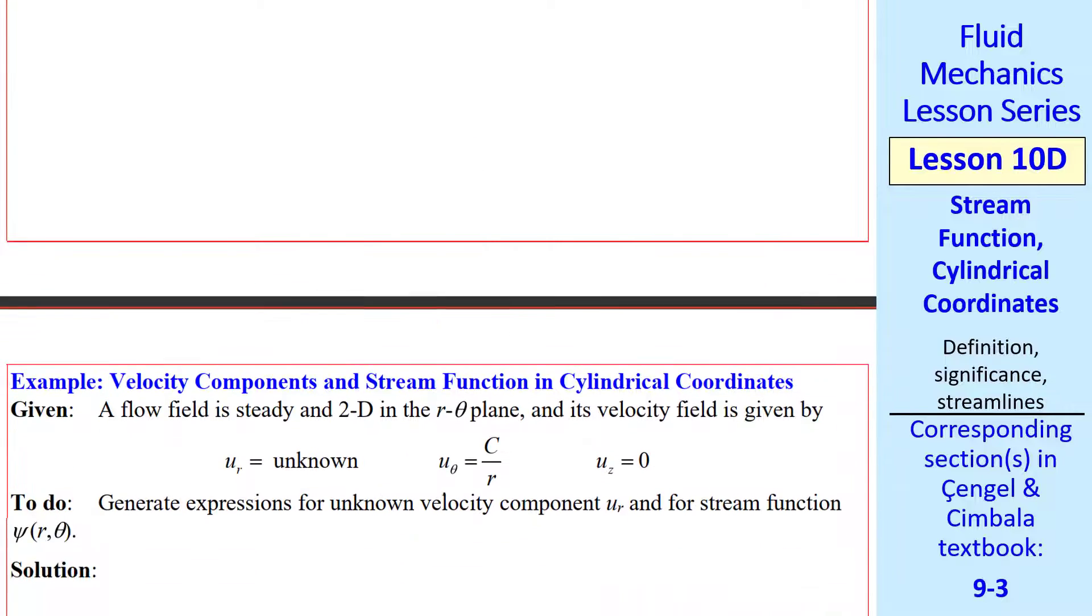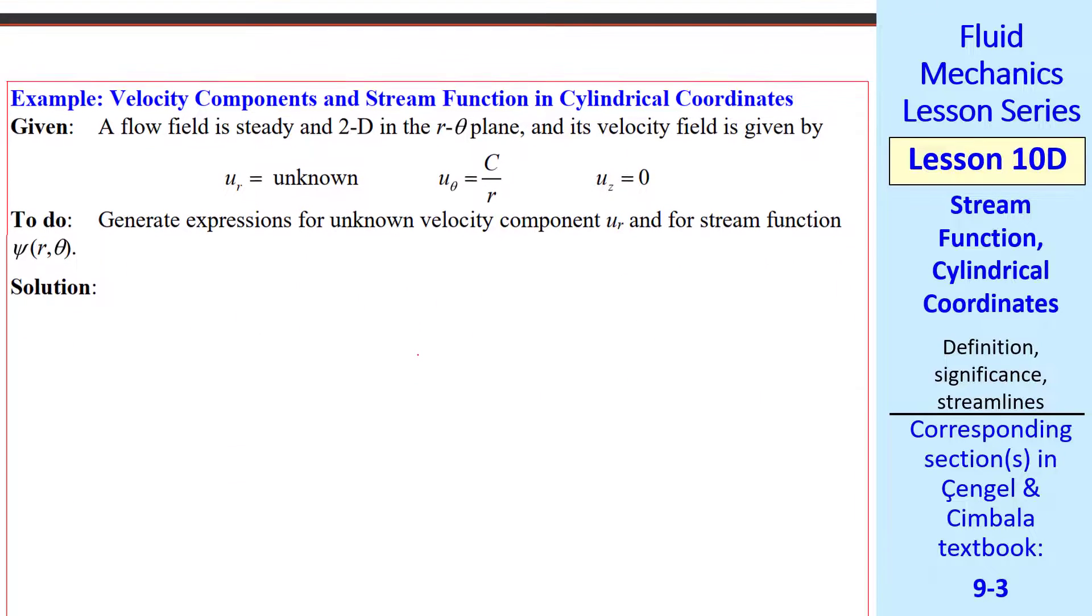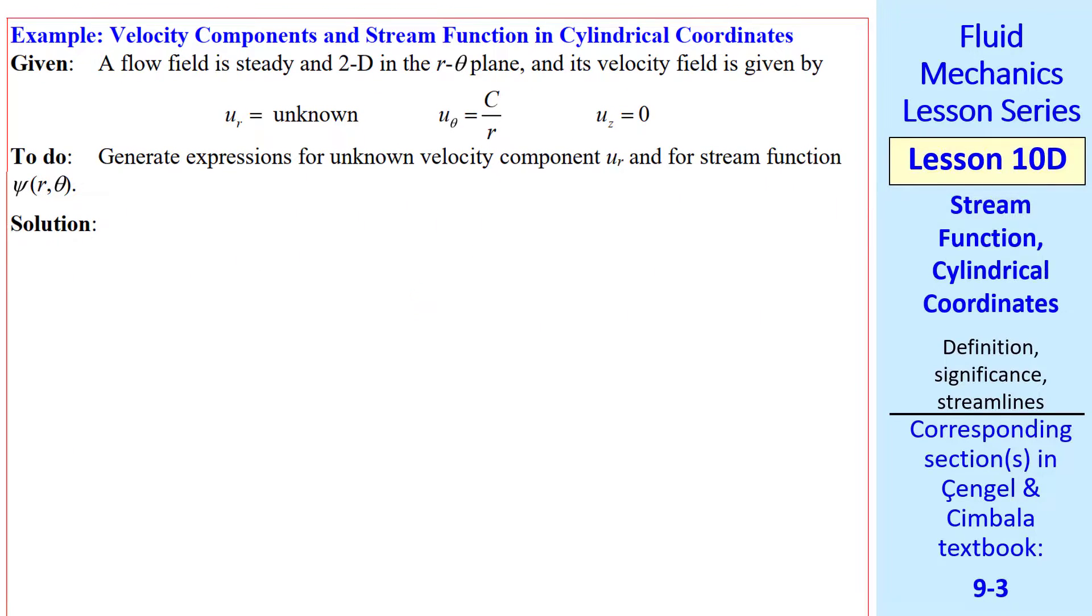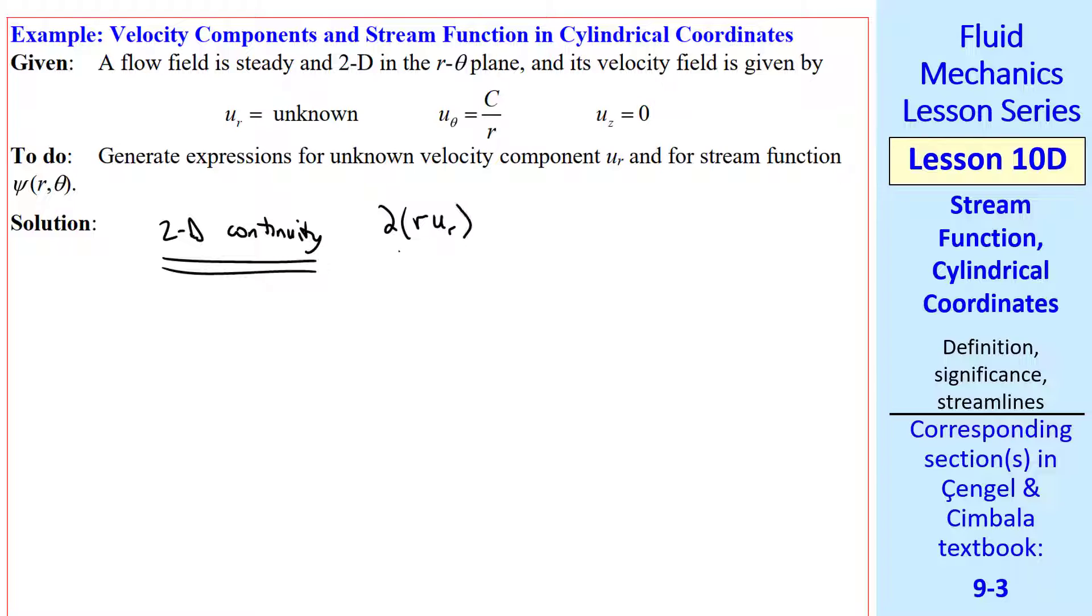I'll do one final example. Again, we have a steady 2D flow field in the r theta plane. This time we have one unknown velocity component and one known one. And since it's 2D, u_z is zero. We want to generate expressions for u_r and stream function psi. To find u_r we'll use 2D continuity as we did previously. In 2D we have del r u_r del r plus del u_theta del theta equals zero. Here u_theta is not a function of theta. So this term is zero. So del u_r del r must equal zero.